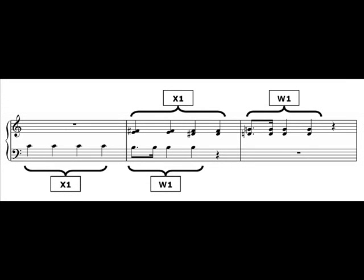In the C section, starting at bar 21, the texture is reduced to three-part homophony of soprano, alto and tenor.